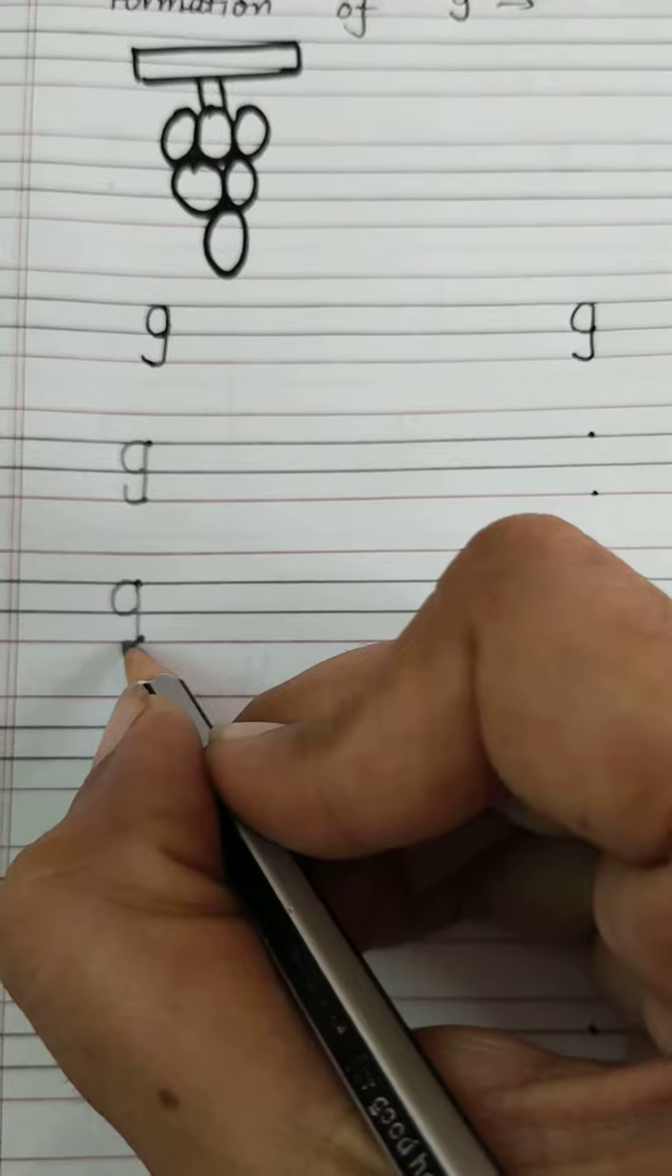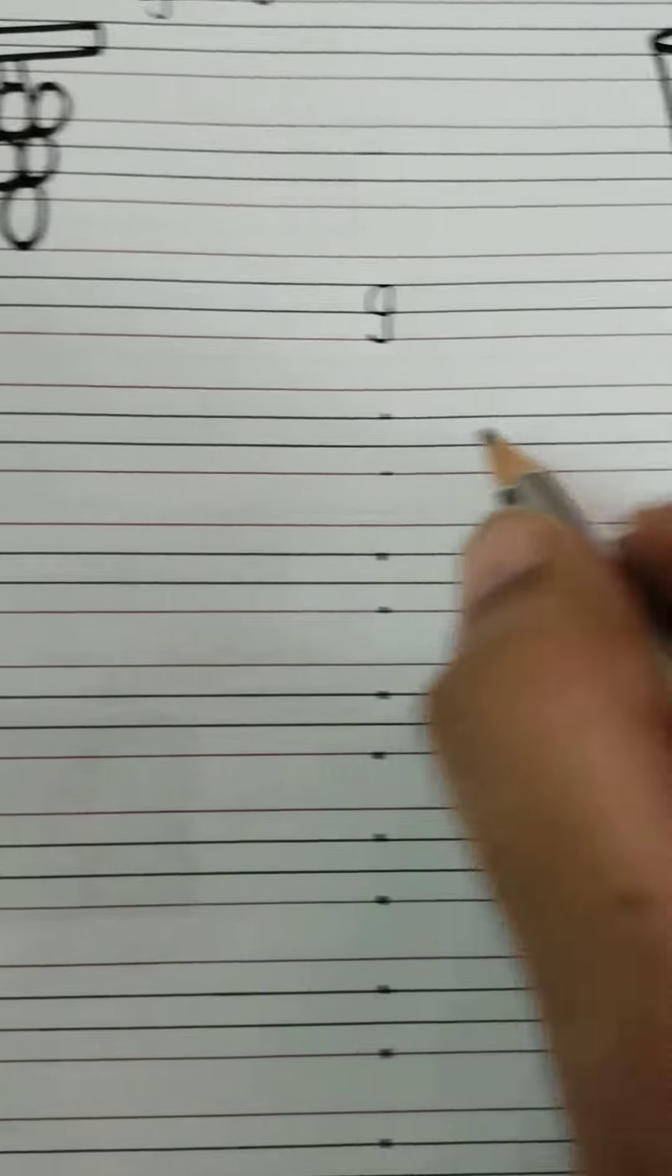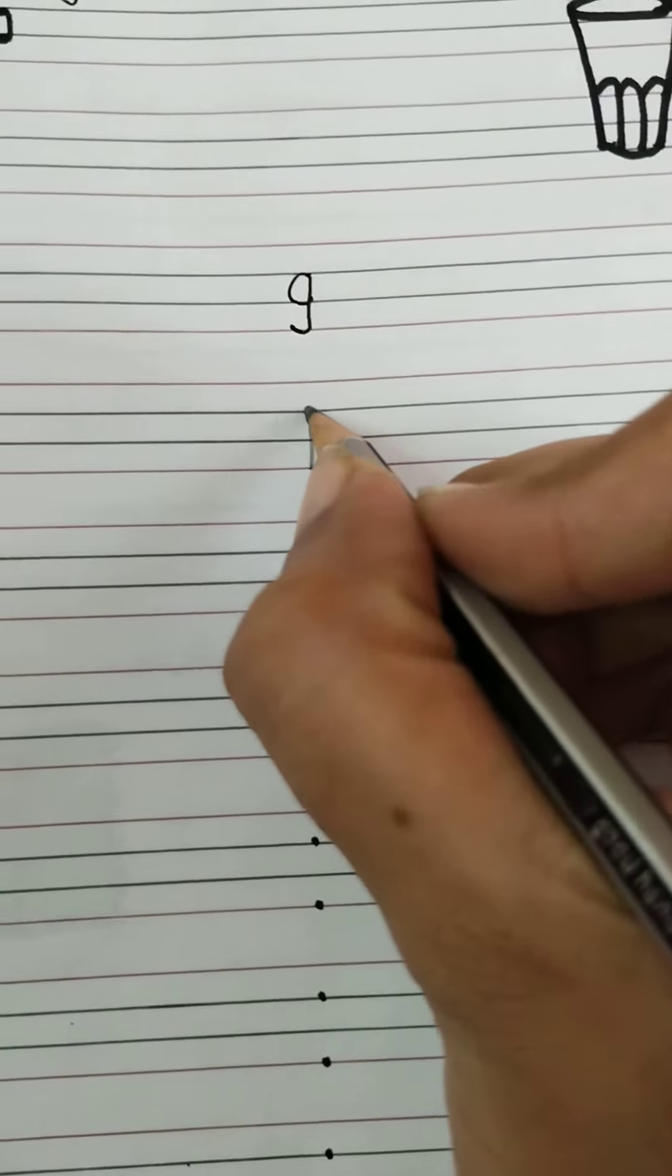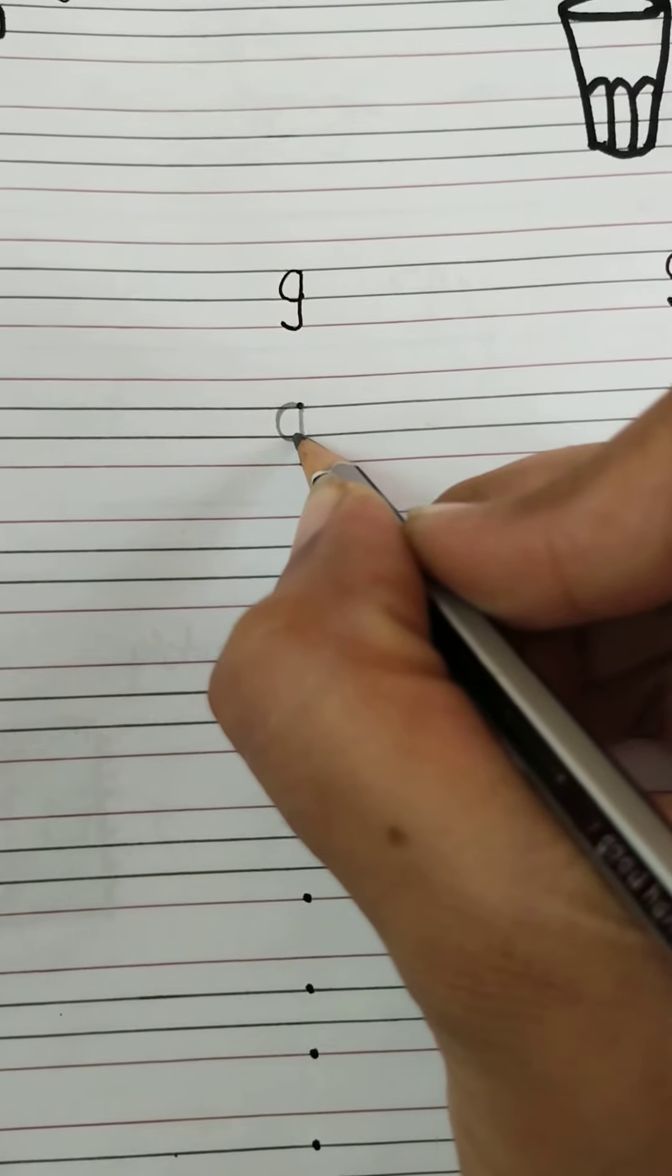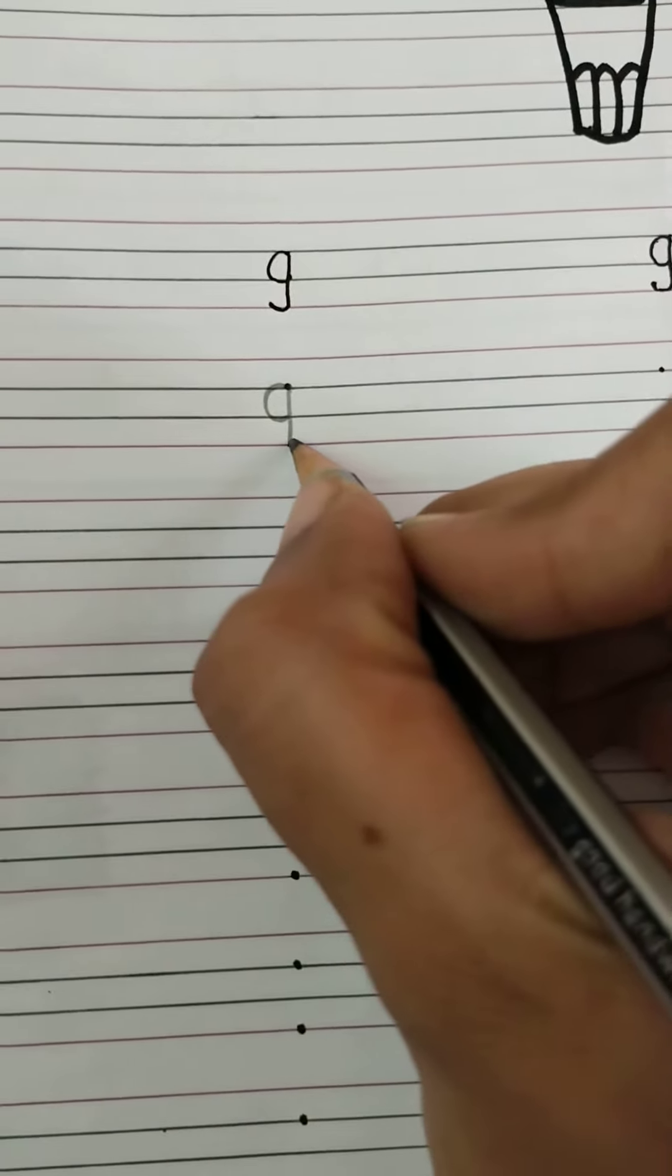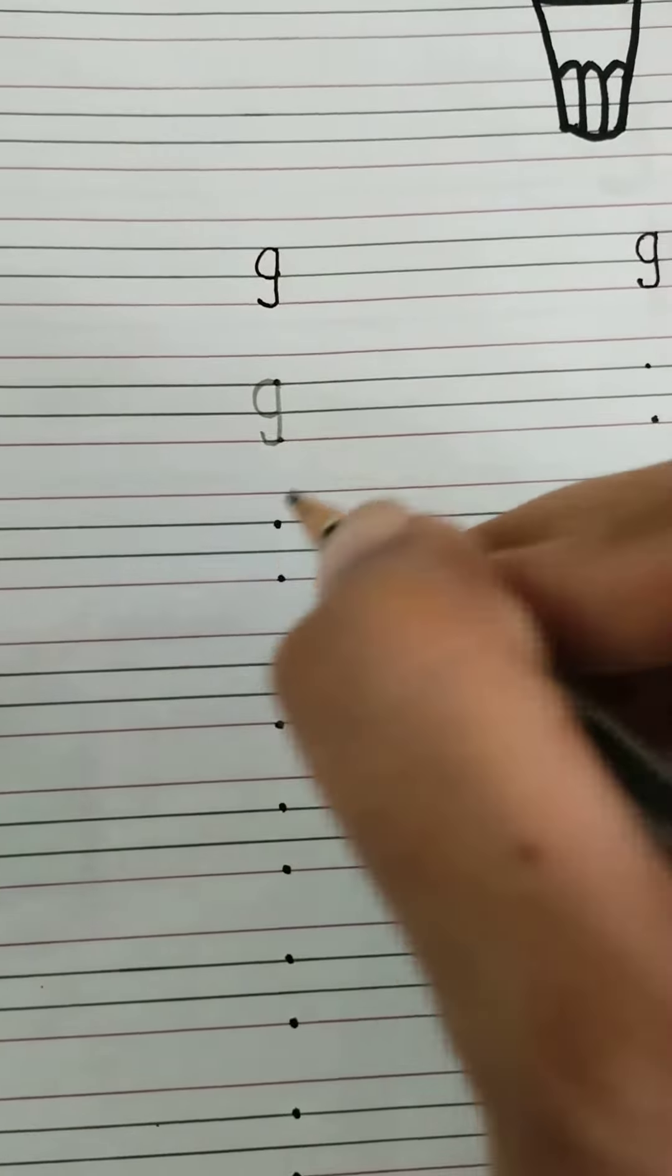Again curve like this. You will make a standing line. Then just a C. Then curve like this. You can simply say that you have first made a 9, then you will make it closer.